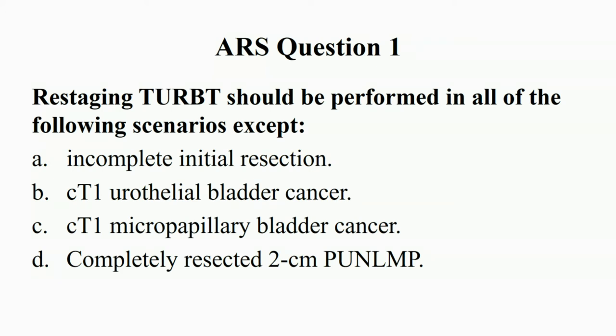Question one: Restaging TURBT should be performed in all of the following scenarios except which one? A — incomplete initial resection; B — clinical T1 urothelial bladder cancer; C — clinical T1 micropapillary bladder cancer; D — completely resected two-centimeter papillary urothelial neoplasia of low malignant potential.